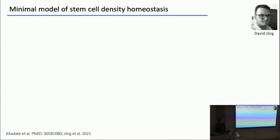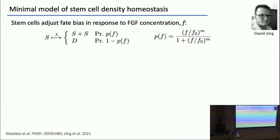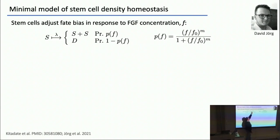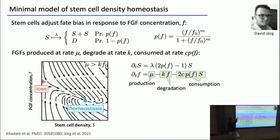David, a postdoc in my group, built a little toy model. Very simple: we've got stem cells S, they divide — they duplicate or they differentiate — with some probability that depends on FGF concentration F. When F is very high, probability P is 1 meaning they duplicate; when F is very low, P is roughly zero and they differentiate. The FGFs are produced at some constant rate from endothelial cells, have some degradation rate, and are consumed by the stem cells, with a Hill function for saturation.